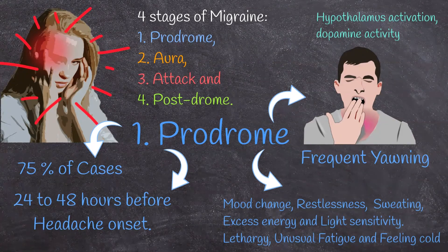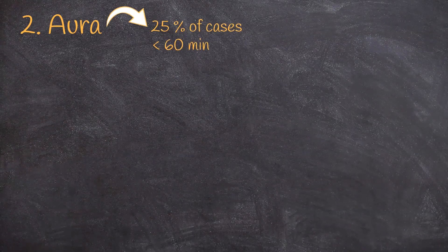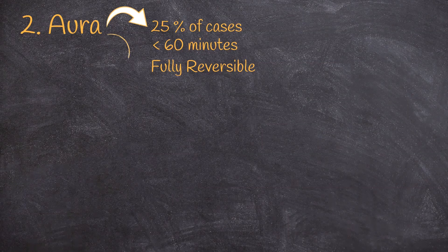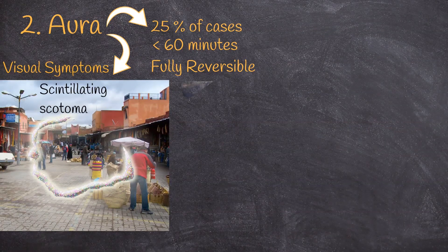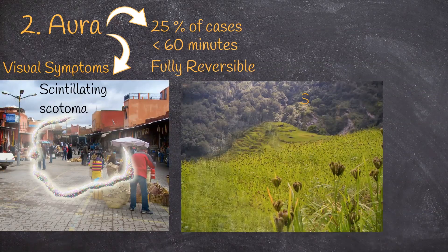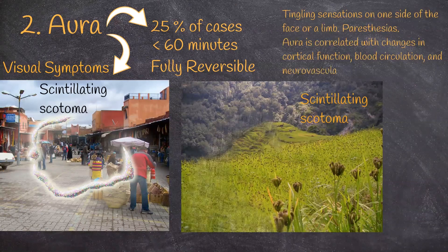Prodrome symptoms are associated with hypothalamus activation and correlated with dopamine activity. The second phase is aura, presented in only 25% of cases. It can precede the headache or present simultaneously. Auras are typically gradual, with less than 60 minutes of duration, more often visual and fully reversible. The most common visual symptom is the scintillating scotoma, which means an area of absent vision with a shimmering or glittering zigzag border. Visual field defects are also common. Sensory auras are also common, usually consisting of tingling sensations on one side of the face or a limb, considered paresthesias. Aura is correlated with changes in cortical function, blood circulation, and neurovascular integration.